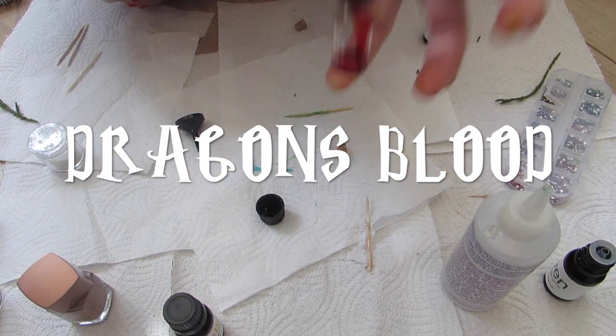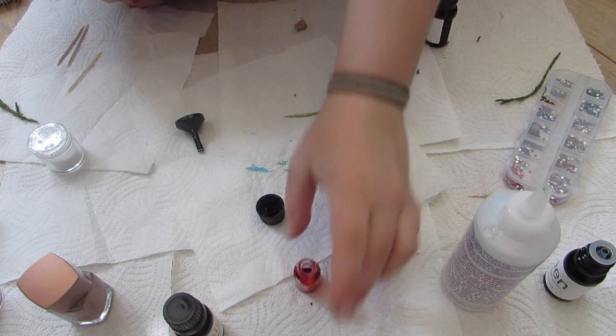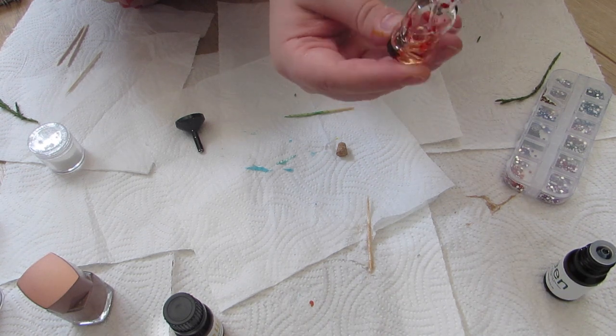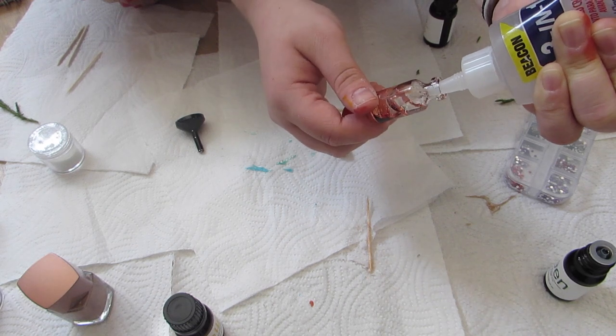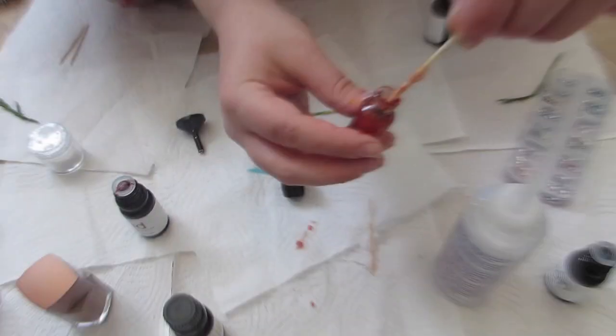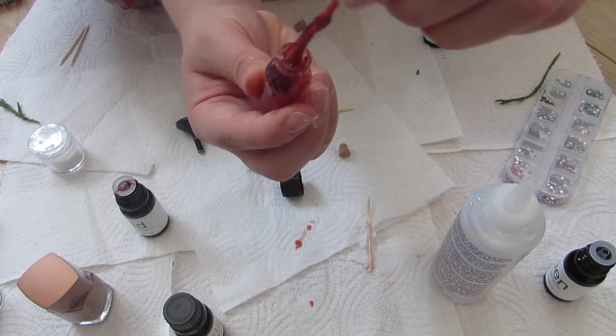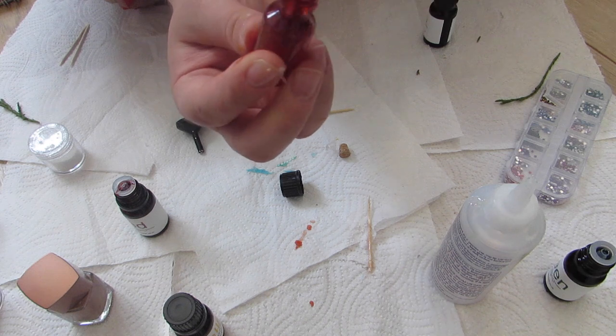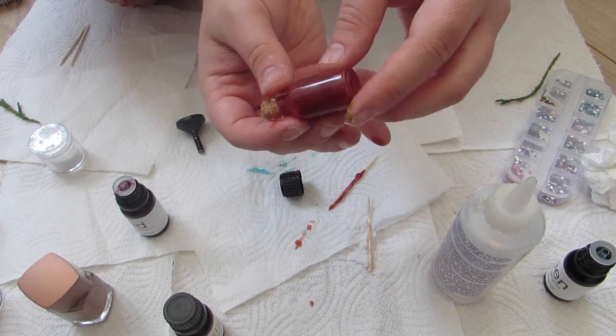Another one that is more of an ingredient than a potion but it is Dragon Blood. All I did was put a few drops of red food colouring into my bottle and then filled it up with clear glue. I did put quite a bit of red food colour in to make sure it was quite a clear colour. And there it is, another really really simple one with only two ingredients.